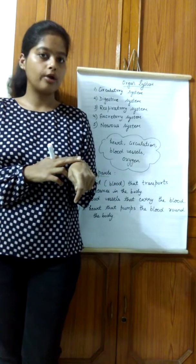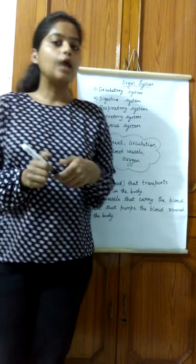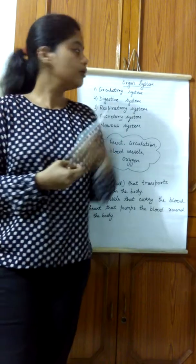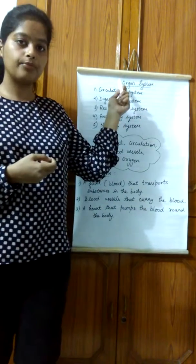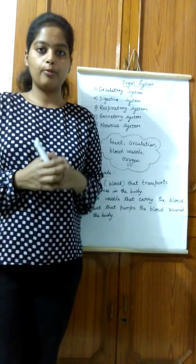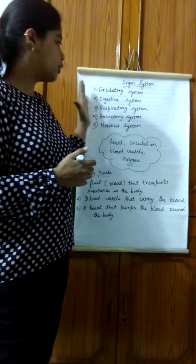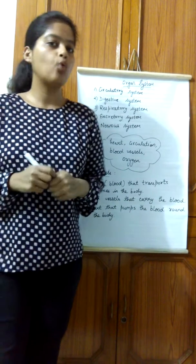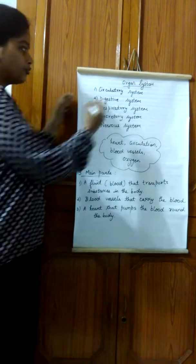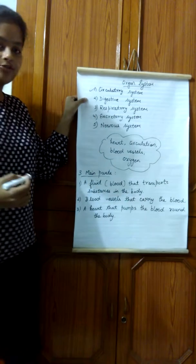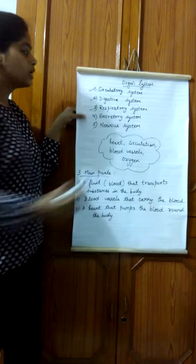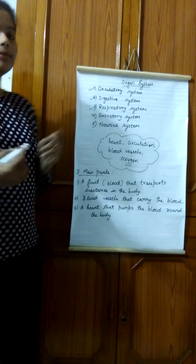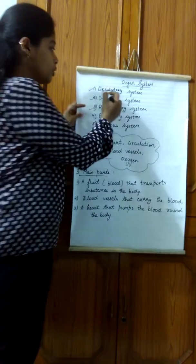Skin is the largest external organ in our body. Now, when these organs work together to perform a specific function, they form an organ system. There are many organ systems in our body, but we are going to cover five main ones in your syllabus: circulatory system, digestive system, respiratory system, excretory system, and nervous system. Today we are going to cover the circulatory system.